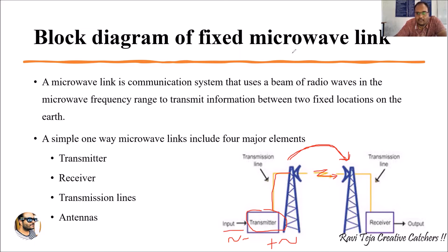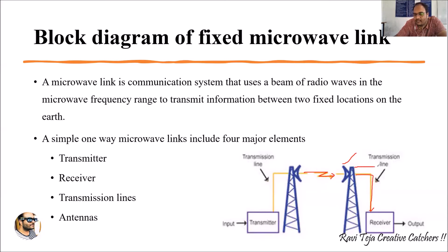At the receiving end, as the signal is transmitted from the transmitting end, it is received by the receiver antenna. This receiver antenna is connected to a transmission line, which carries the modulated signal from the receiving antenna and delivers it to the receiver. The job of the receiver is to demodulate the incoming signal.